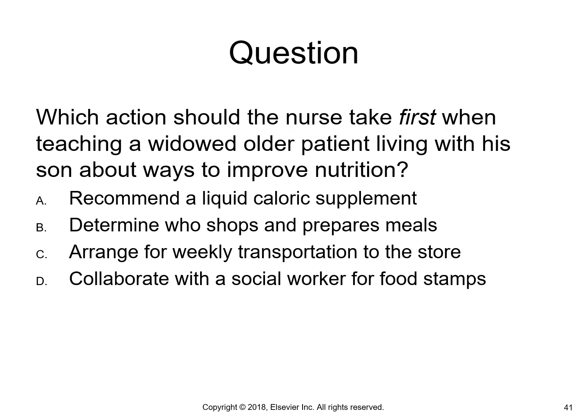Quiz question: Which action should the nurse take first when teaching a widowed older patient living with his son about ways to improve nutrition? A: Recommend a liquid caloric supplement; B: Determine who shops and prepares foods; C: Arrange for weekly transportation to the store; D: Collaborate with social workers for food stamps. The answer is B — determine who shops and prepares the food. That is the first most important step in determining nutrition interventions because assessment is the first step.